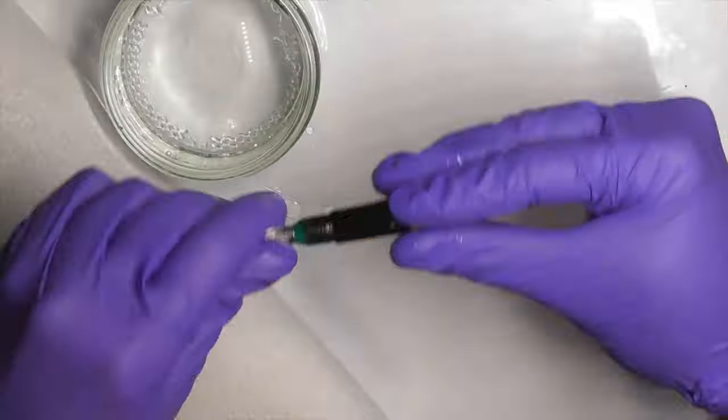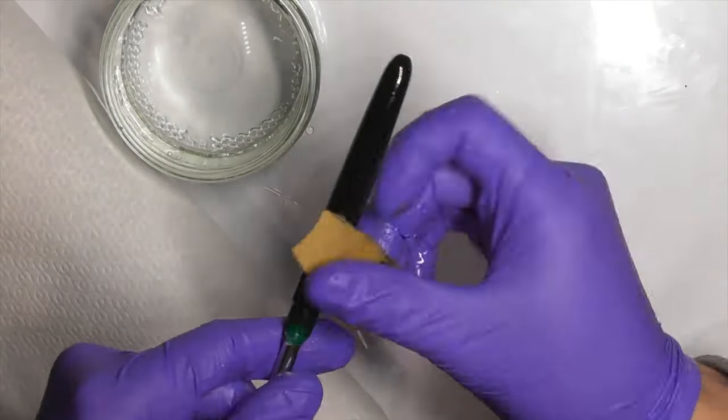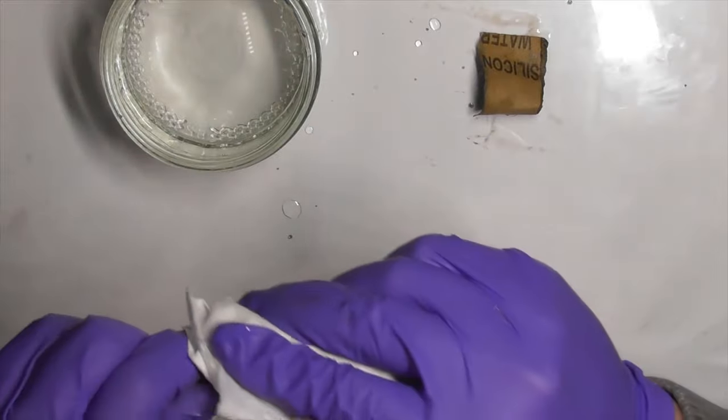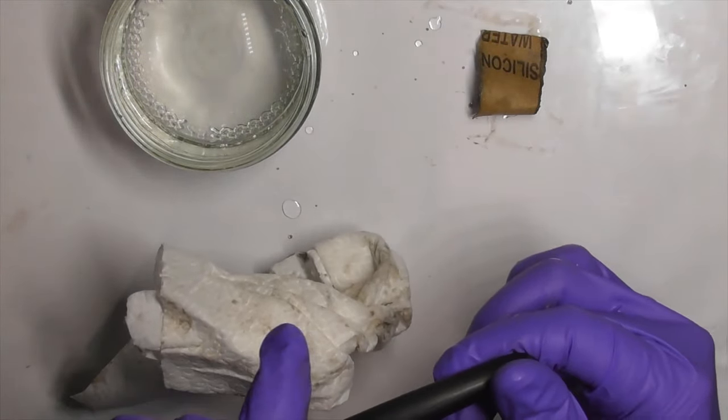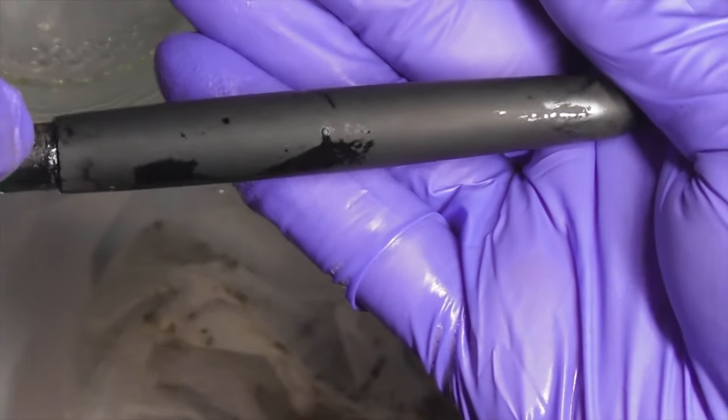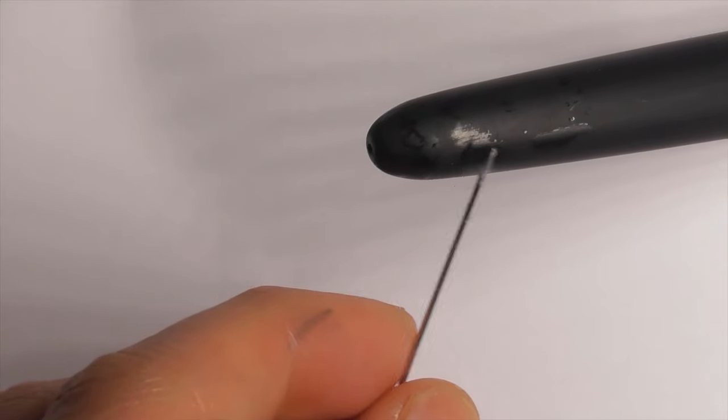Step two, wet sand the pen with 1200 grit sandpaper. Clean the pen regularly with a cloth to check it. Don't worry if you sand through the top layer of paint. It is fine as long as you don't see the plastic substrate.